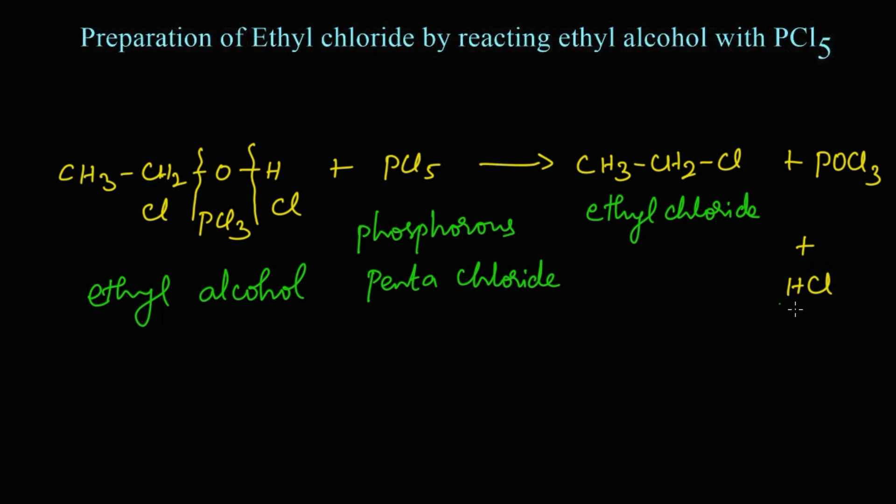Come on, let's summarize the reaction. When ethyl alcohol, that is ethanol, reacts with phosphorus pentachloride, the reaction takes place as I explained - that is the bond between the carbon and oxygen will break, and the bond between the oxygen and hydrogen also will get break.